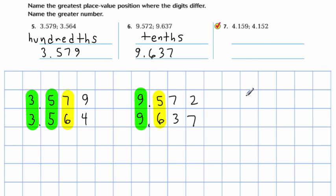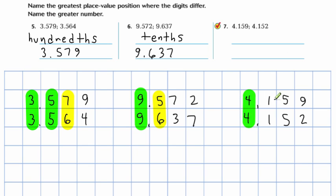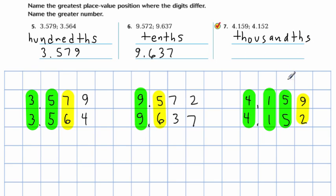Moving on to the last one: 4 in the ones place, 4.159, and then 4.152. Make sure that the ones are lined up — they are. Comparing: ones are the same, tenths are the same, hundredths are the same. Where do they differ? They differ in the thousandths place — thousandths with a 'th' on it. Which one's greater? 9 is greater than 2, so 4.159 is greater than 4.152.